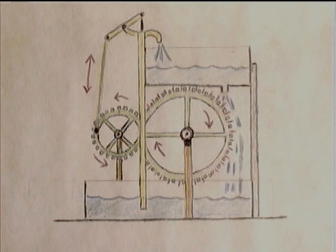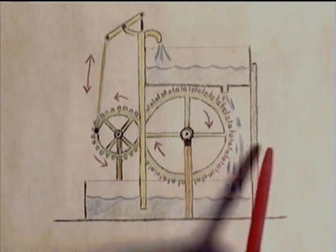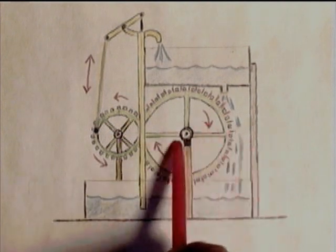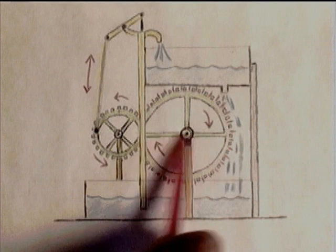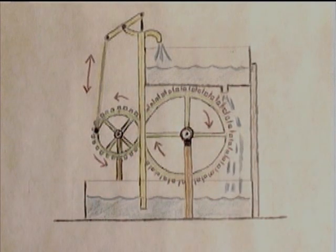Say you want to use the water wheel to generate electricity. So you hook it up to an electrical generator. You put the generator here and you run a pulley to it. The water wheel cannot do two things at once. It does not have enough energy to raise the water back up and also generate electricity.